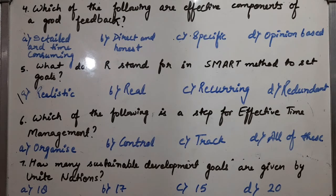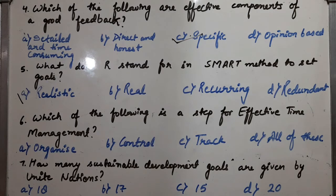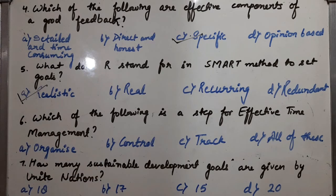Fourth MCQ: Which of the following are effective components of good feedback? A good feedback is one which is specific. Fifth MCQ: What does R stand for in the SMART method to set goals? The SMART strategy is used for achieving goals: S stands for specific, M for measurable, A for achievable, R for realistic, and T for time-bound. You should remember and learn its full form.